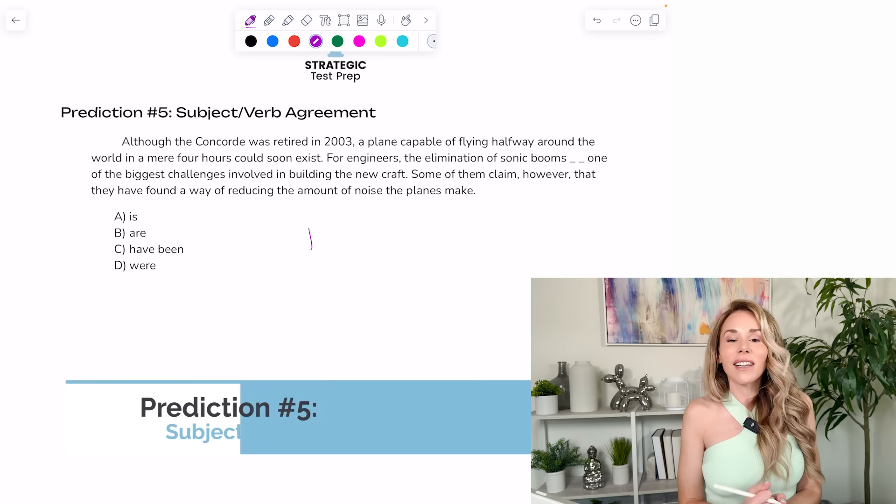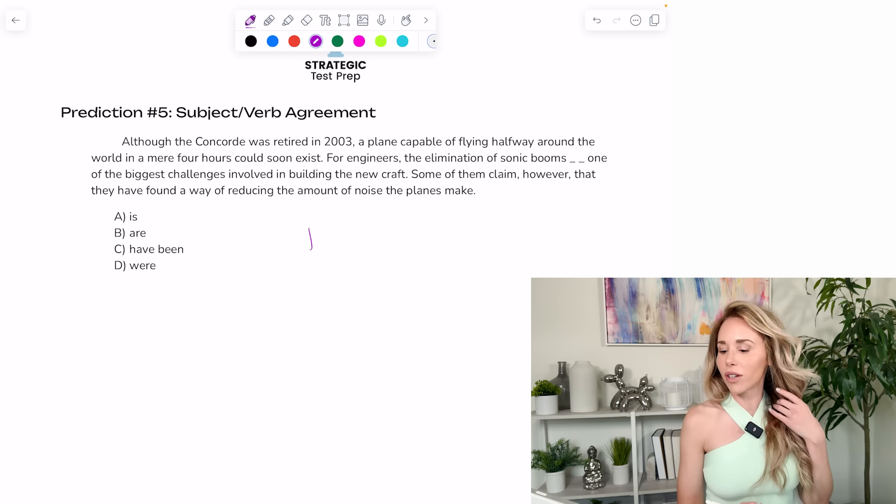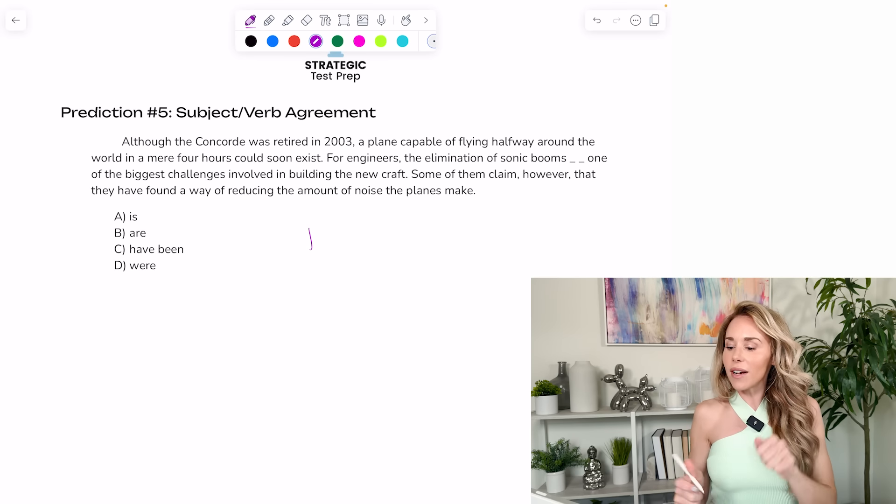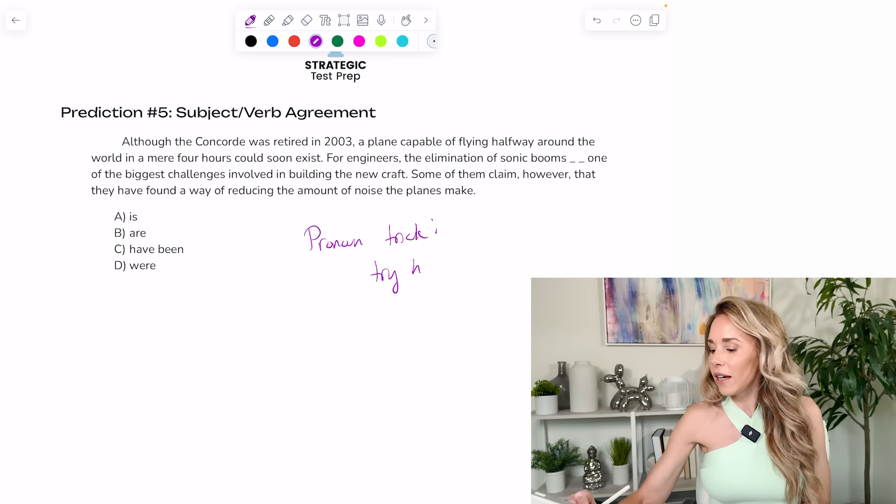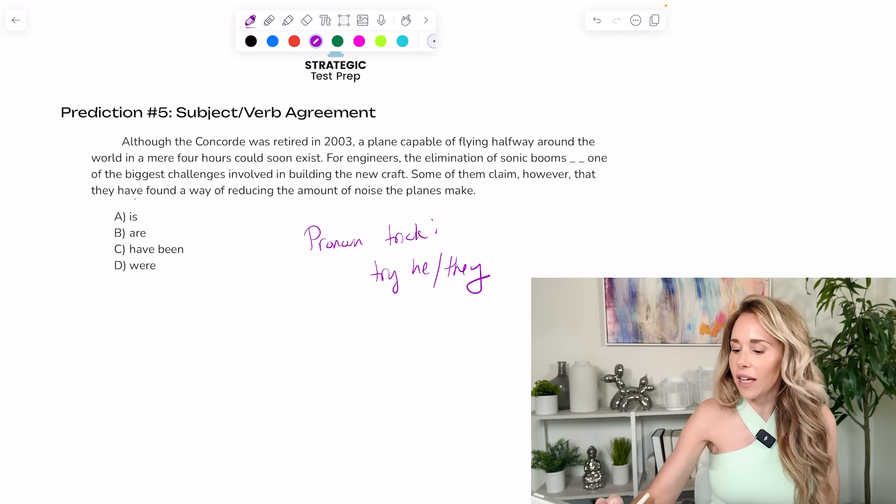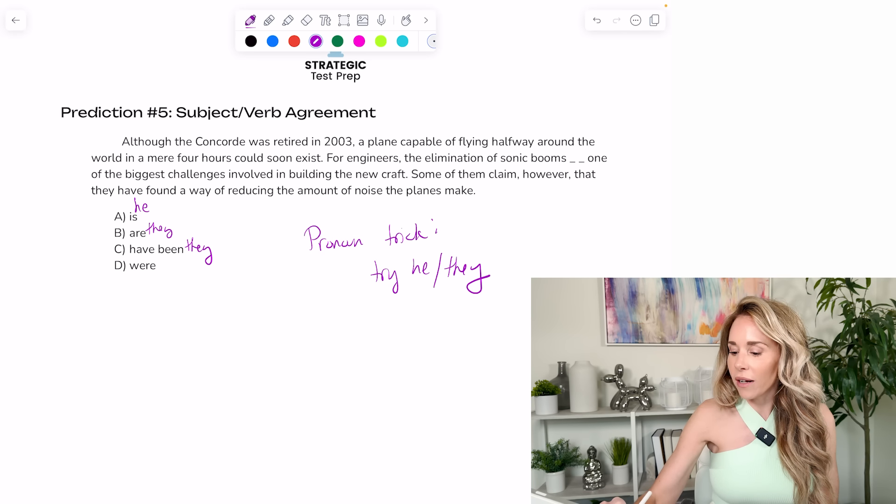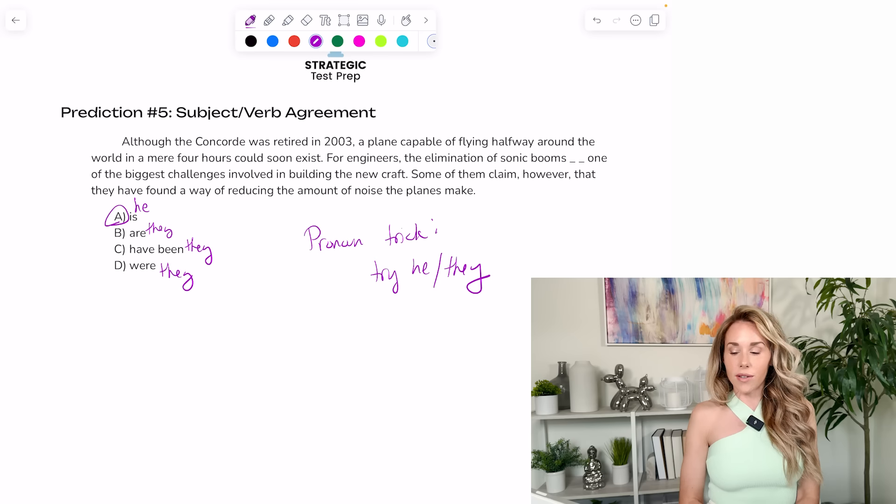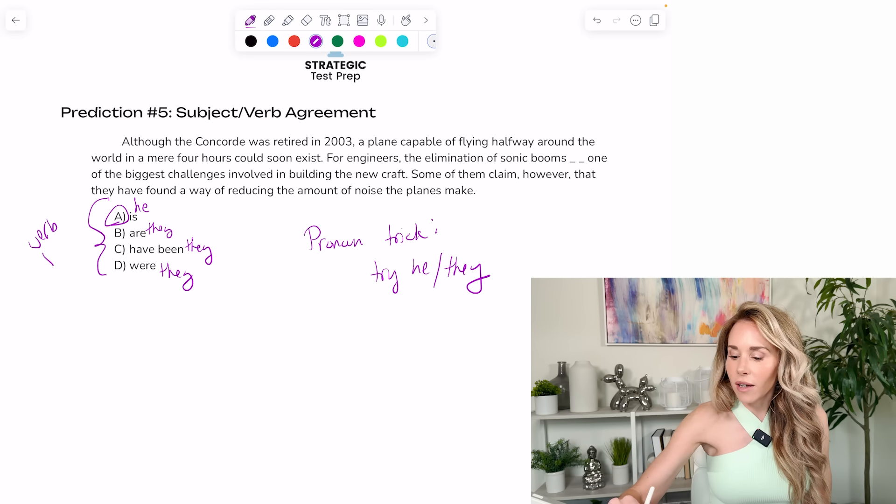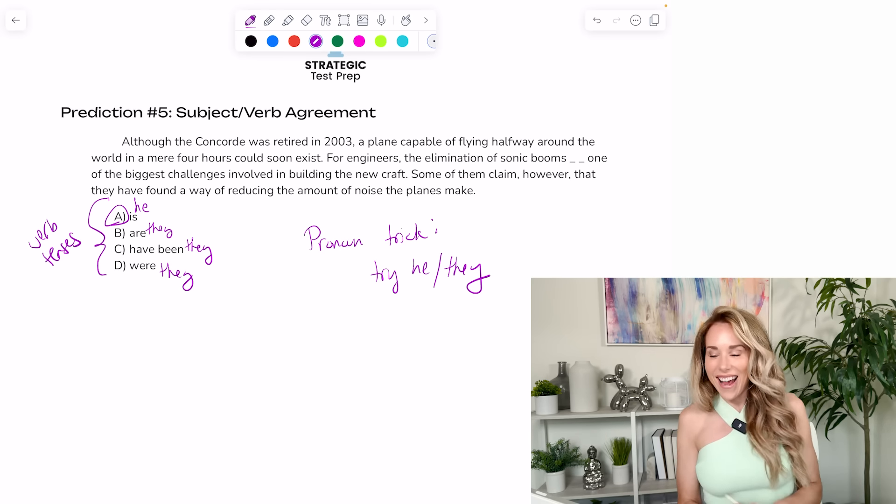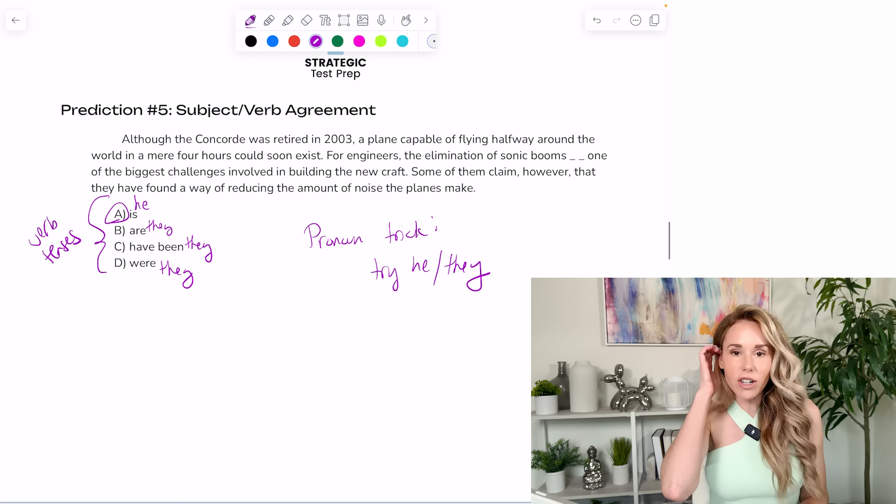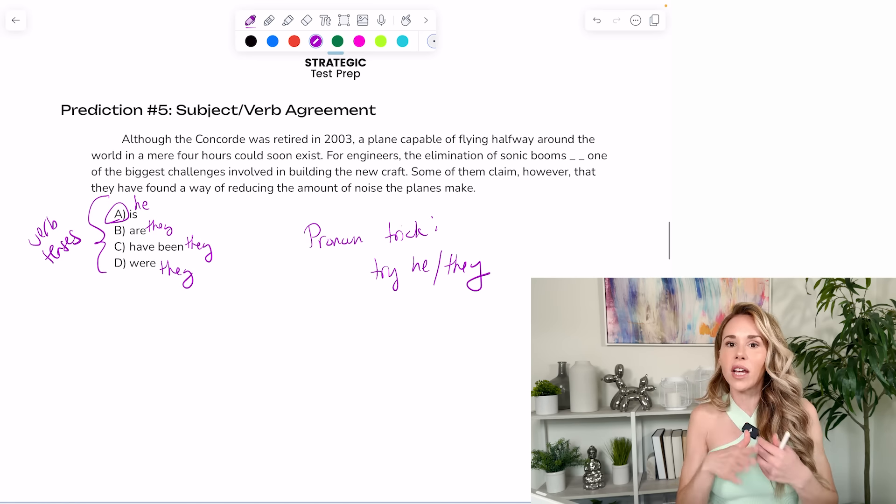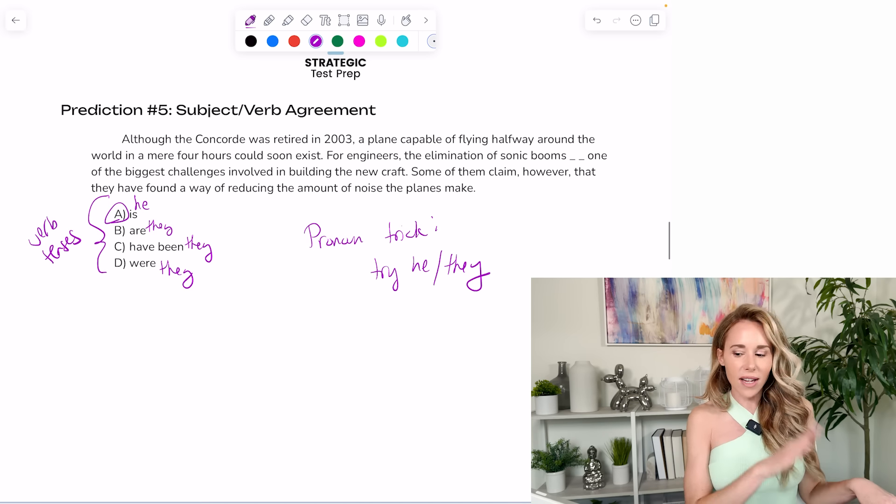My fifth prediction is that there will be at least one subject verb agreement question on June. There always is a subject verb agreement question. So just as a reminder, you guys, you can use the pronoun trick. Try he and they, and you want to pick the one that's different. I would say he is, they are, they have been, they were. So the answer is A, is. So anytime you have verb tenses as your answers, try this trick, and you'll probably get the question right. Now, if the same pronoun works for all four of them, you're on a parallelism question. So then you have to look around in the text to see what tense everything's written in. If it's all in past tense, pick a past tense verb. But most of the time, it's going to be subject verb agreement.